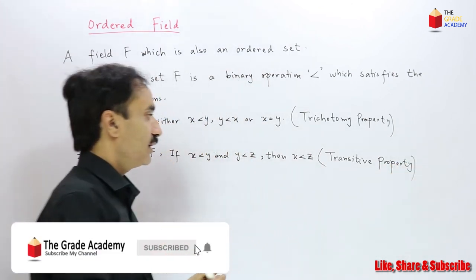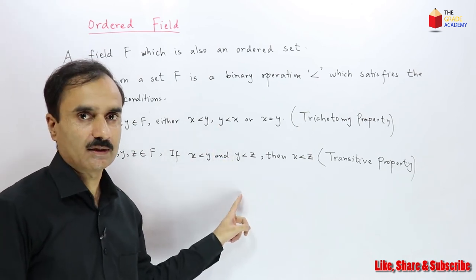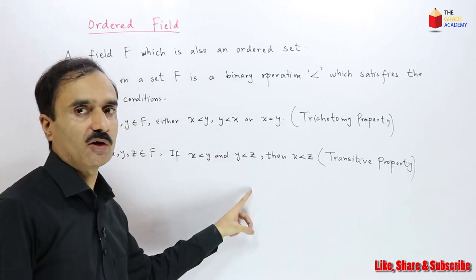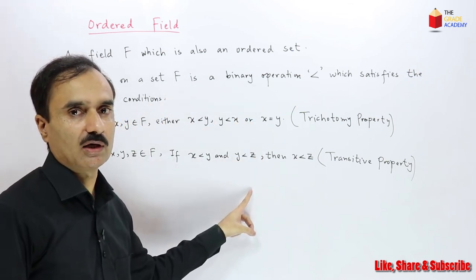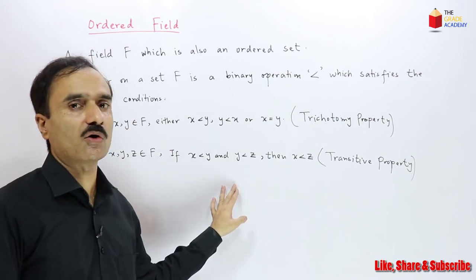A binary operation satisfying these two properties is called an order on a set. A field F with an order defined on it is called an ordered field. An ordered field is a field which is also an ordered set.